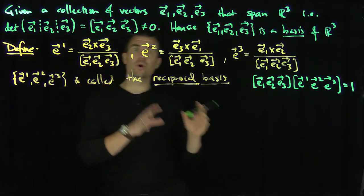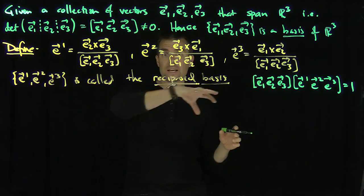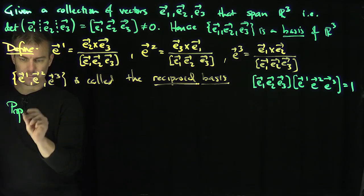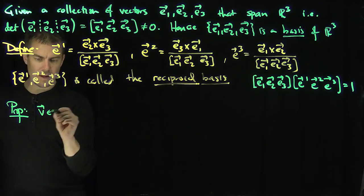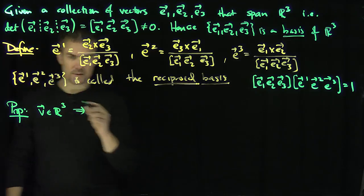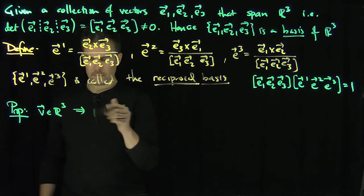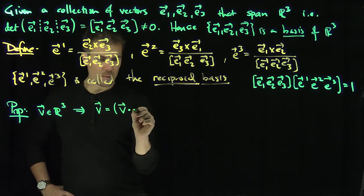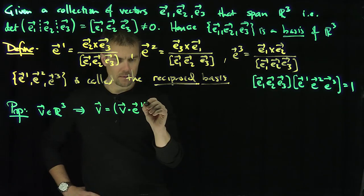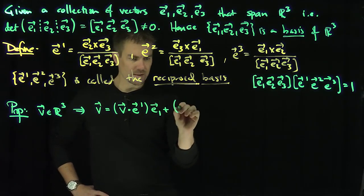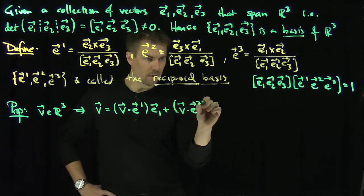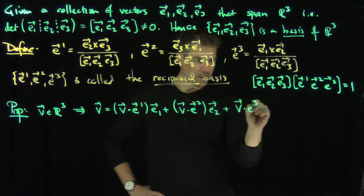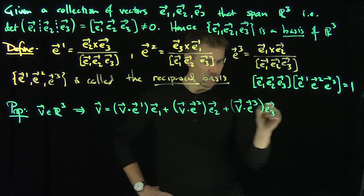But what I'm more interested in this video is to show that if I expand a vector in either one of these bases, I can find what the coefficients are easily. And so let's consider this here as a proposition for us. If V is a vector in R3, then this implies that V is going to be the inner product, the dot product of V with E1 upper, E1 lower, plus the inner product of V with E2 upper, E2 lower, plus V dot E3 upper, E3 lower.